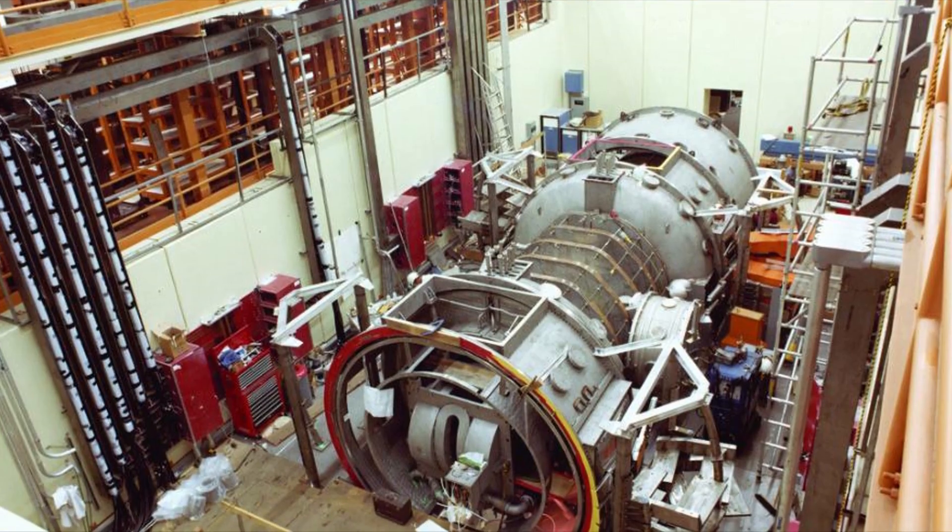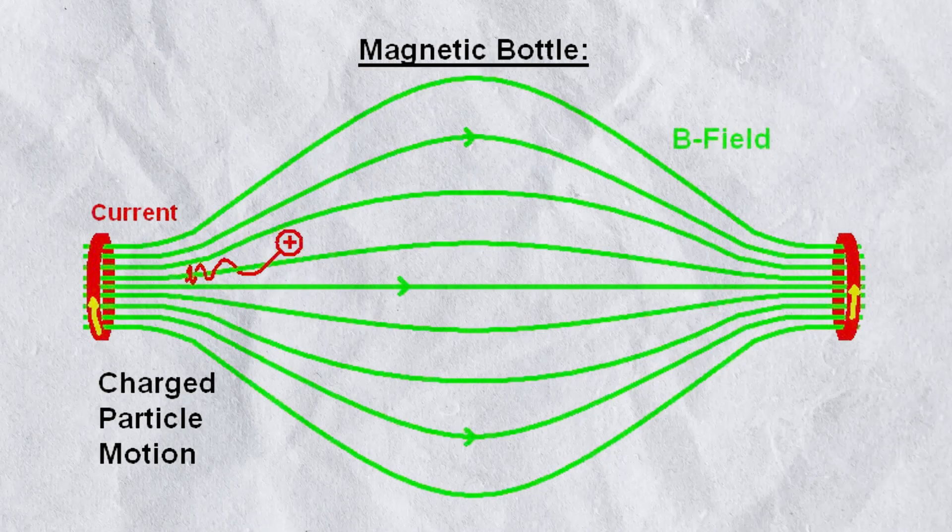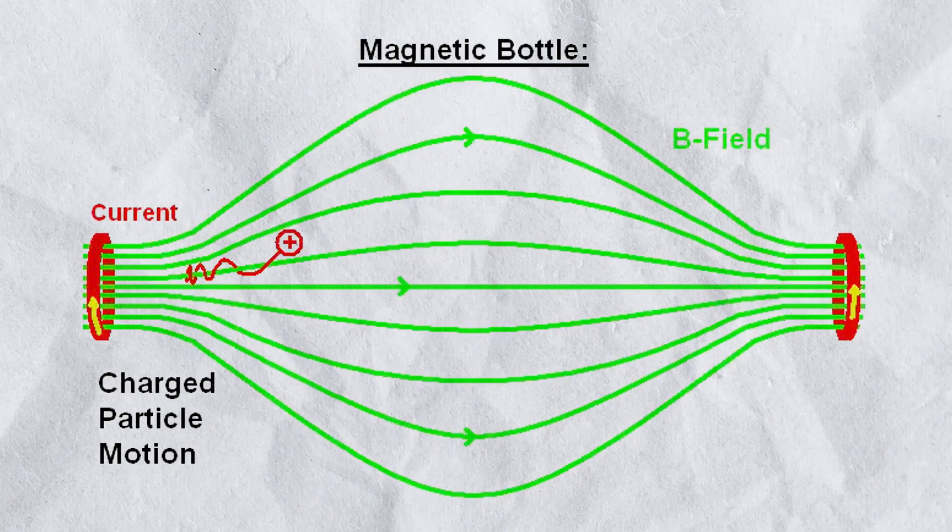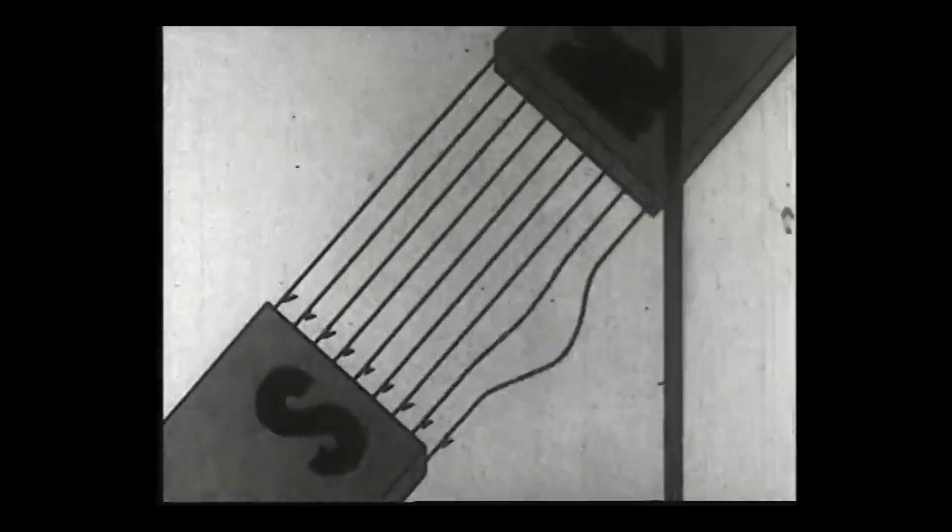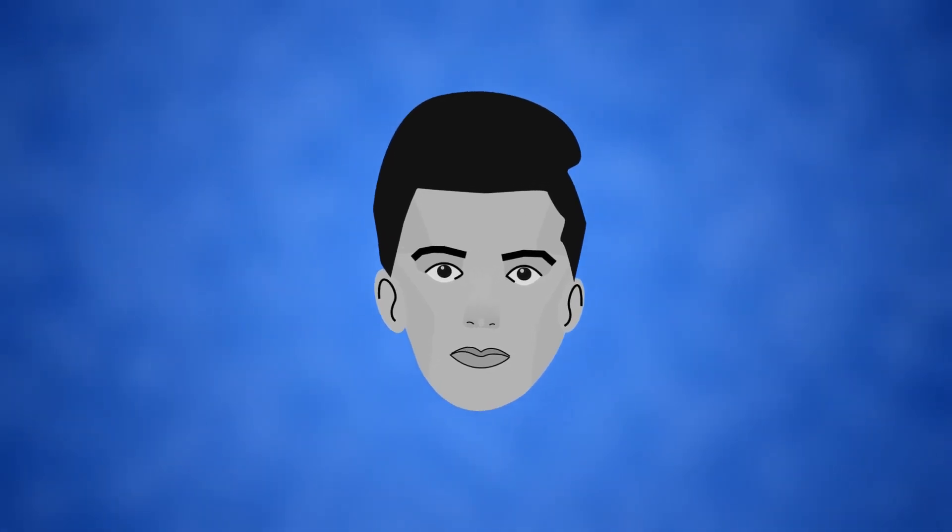Instead, we have to use a magnetic trap to stall the antimatter inside a perfect vacuum, using magnetic and electric fields to keep it suspended without touching any walls.